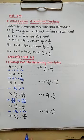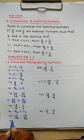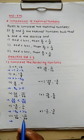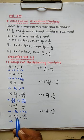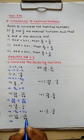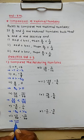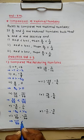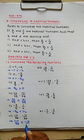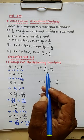Sixth example: minus 17 divided by 20 compared to minus 13 divided by 20. The denominators are equal. Minus 17 divided by 20 is less than minus 13 divided by 20.